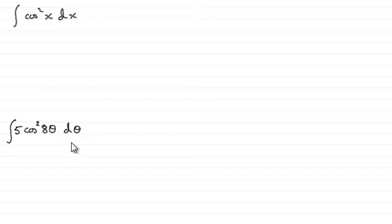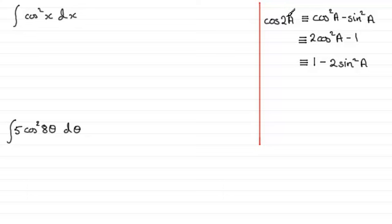So to integrate any cos squared function what we need to do is turn to this identity that you should be familiar with cosine 2a. Cos 2a is identical to cos squared a minus sine squared a or 2 cos squared a minus 1 or 1 minus 2 sine squared a.